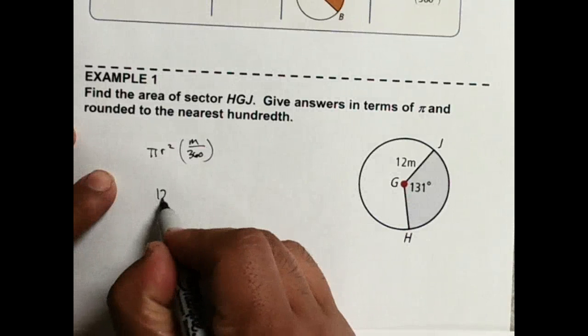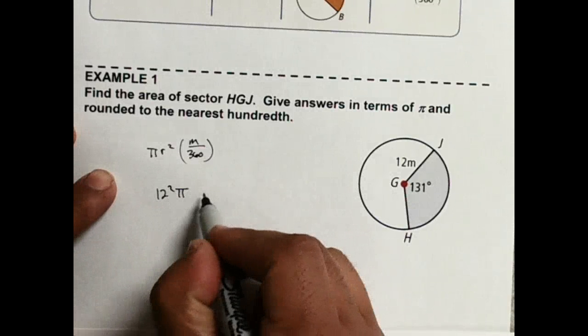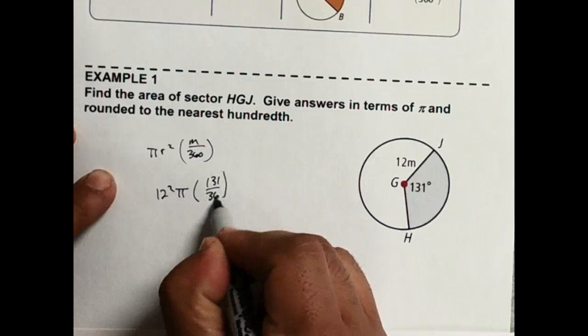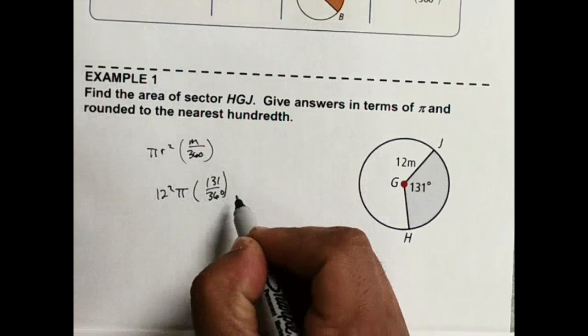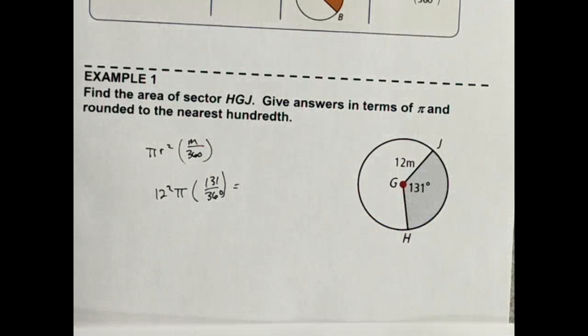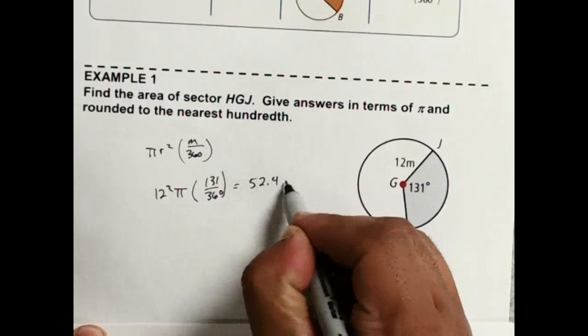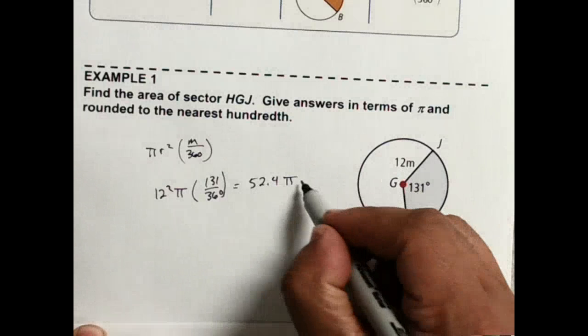So then this would be 12 squared pi and then my angle is 131 over 360. So I need to put that in the calculator and see what we come out with. All right, so that comes out to be 52.4 pi meters squared.